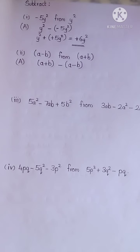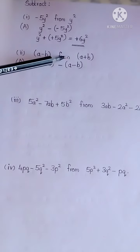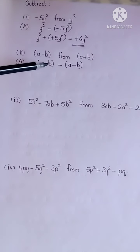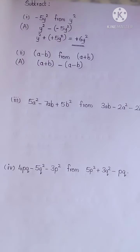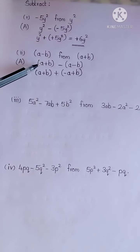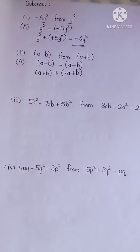Now you can see I have written the algebraic expression for this: a plus b minus a minus b. First expression as such, subtraction sign will change to addition sign, and additive inverse of the second expression. Now you can see I have written the first expression as such, subtraction sign changed to addition sign, and additive inverse of the second expression. Now combine the like terms.